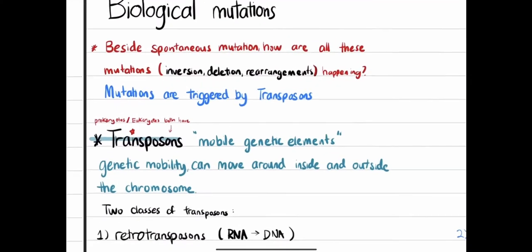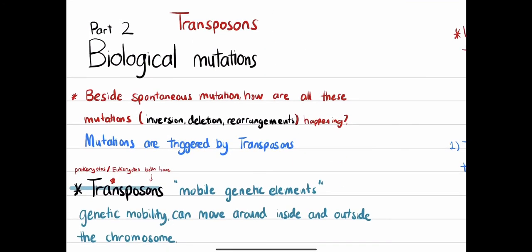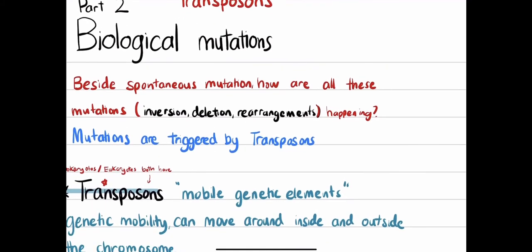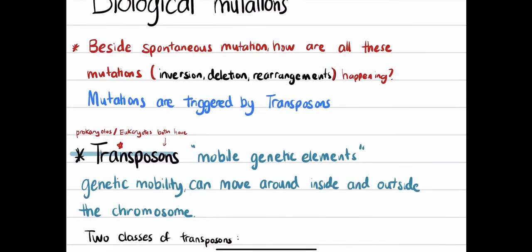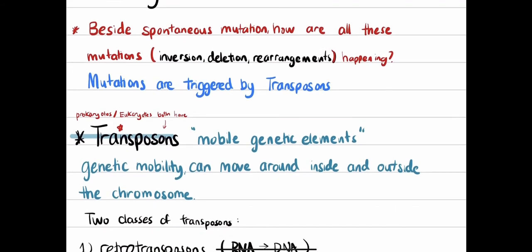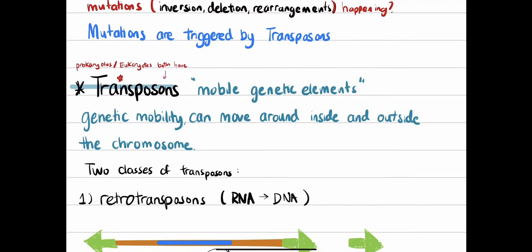So what is the mechanism behind transposons? Before we get to the mechanism, we want to know what a transposon is by itself. Transposons are mobile genetic elements with the ability to move around, and we want to talk about the two classes of transposons.